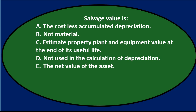We'll go through the process of elimination. A says the cost less accumulated depreciation — that's the book value, not the salvage value unless we're at the very end of the useful life, so probably not A. B says not material — that might be true sometimes, but it's not the definition of salvage value, so not B. C says estimated property, plant, and equipment value at the end of its useful life — that seems pretty reasonable, so we'll keep C.